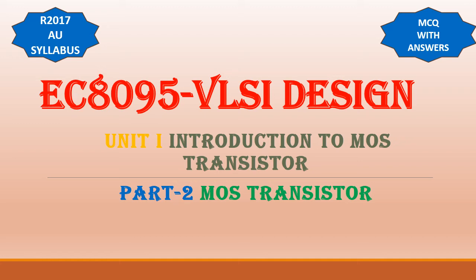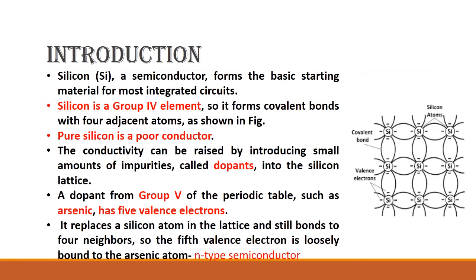Hello everyone, welcome to my channel. In this video we are going to see basics of MOSFET transistor. The basic starting material for integrated circuits is silicon. It is a semiconductor and a poor conductor because silicon has four valence electrons, which form covalent bonds with nearby silicon atoms, leaving no free electrons for conduction. To overcome this, we add impurities called dopants.